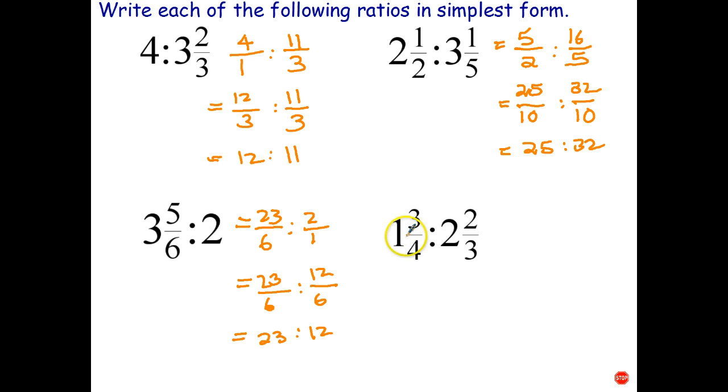Okay, the last question. Write 1 and 3 quarters - 4 times 1 is 4 plus 3 is 7. So that becomes 7 over 4. 2 times 3 is 6 plus 2 is 8. So that becomes 8 over 3.